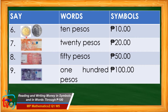For number six, we have also the old ten-peso coin and the new ten-peso coin. We say ten pesos. If we write it in words, we write the words ten then pesos. And if we write it in symbols, we write first the peso sign then the amount which is ten followed by a decimal point and two zeros. We read this as ten pesos.